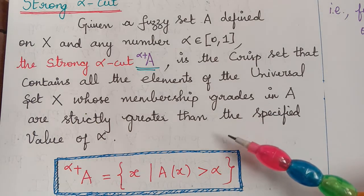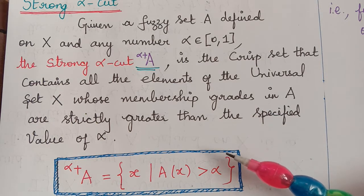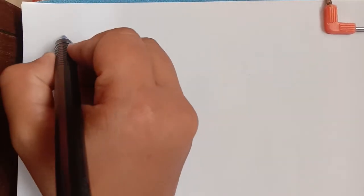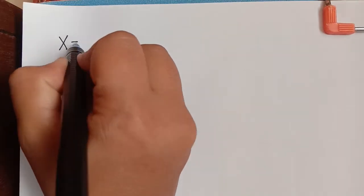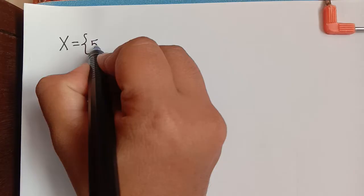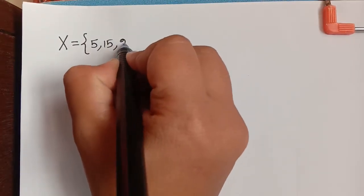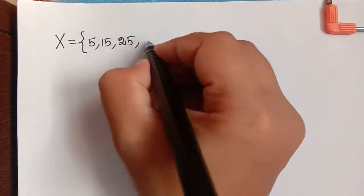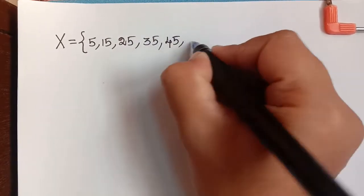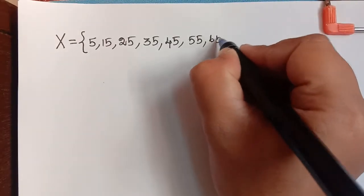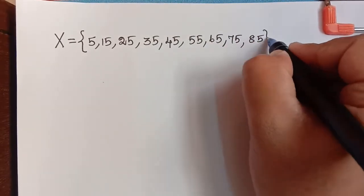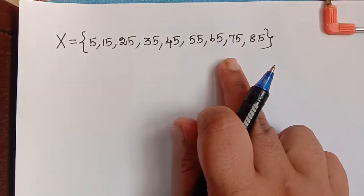Let's understand these two concepts with the help of an example. We will consider the universal set to be ages: 5, 15, 25, 35, 45, 55, 65, 75, and 85.